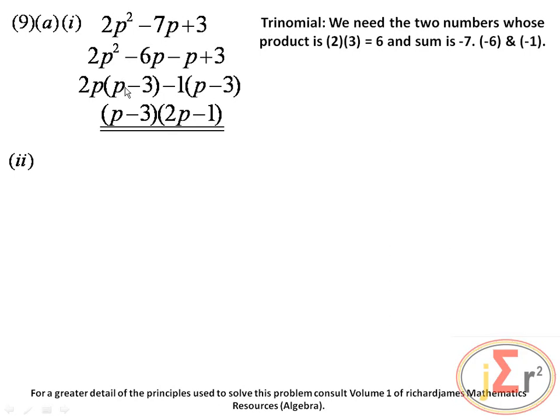So (p minus 3) is the common factor, and (2p minus 1) occupies the second bracket. This 2p minus 1 did not appear by magic — Richard James' mathematics resources can be consulted to justify the placing of (2p minus 1) in the other bracket. There is a very serious principle behind that which justifies its correctness.